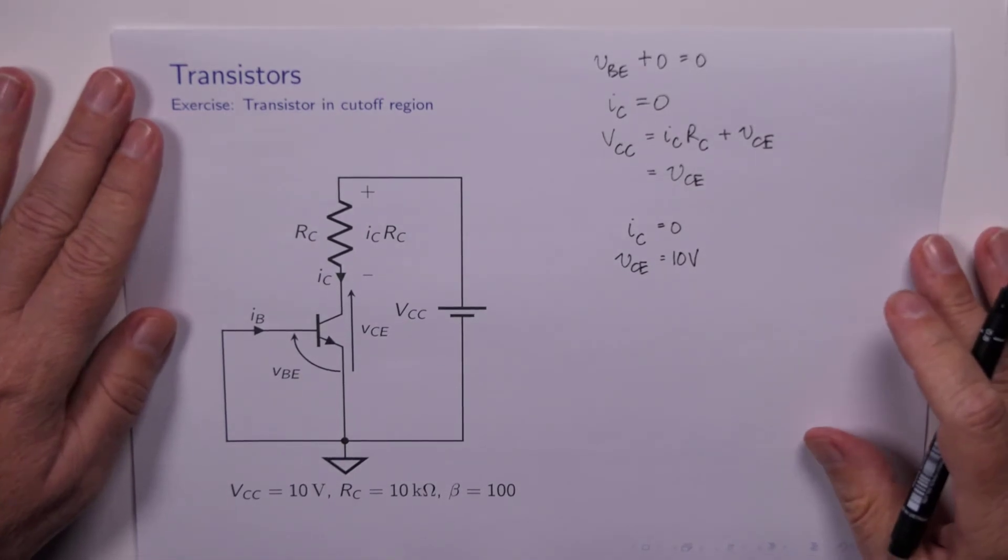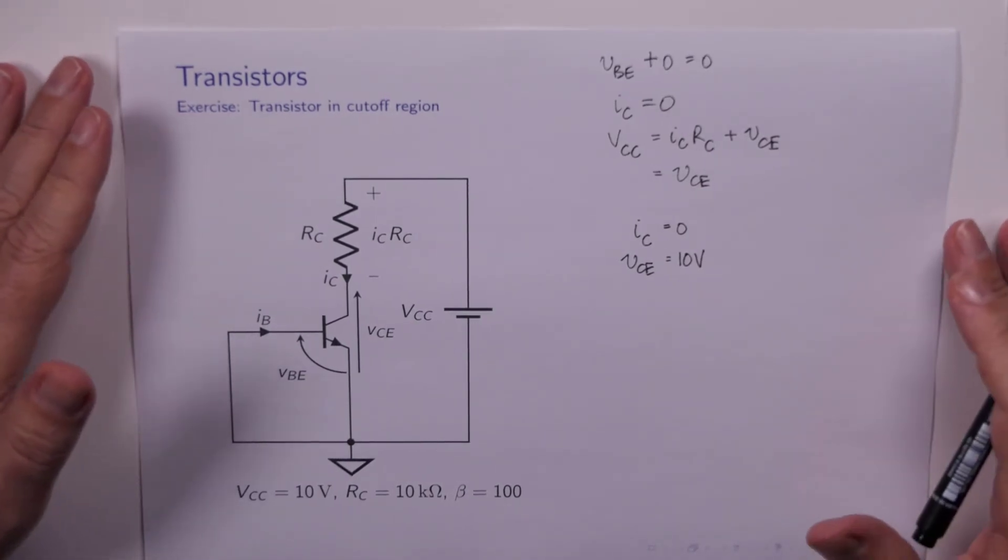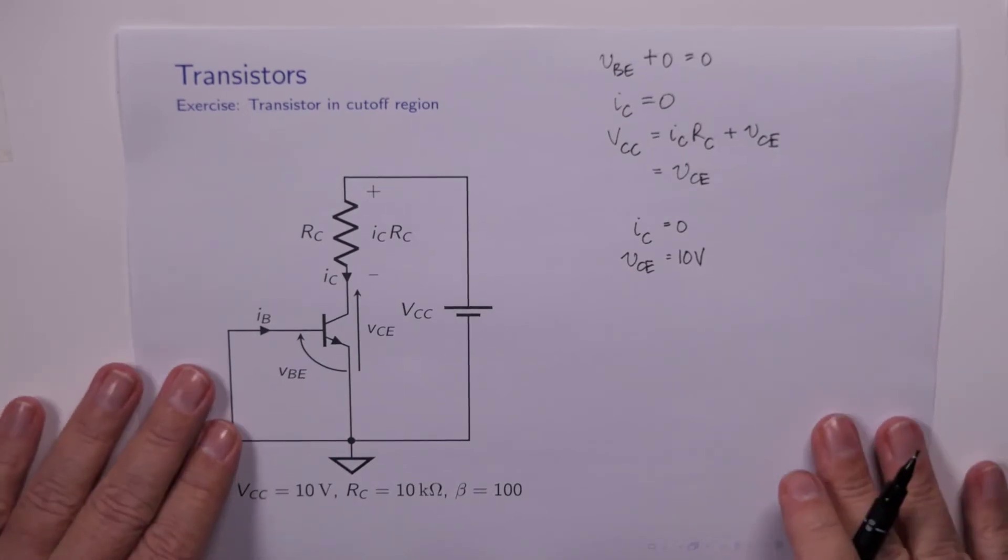So the solution here is IC equals 0 and VCE equals 10 volts. That's all there is to it. So it's not a very useful circuit, but we're not about that yet.